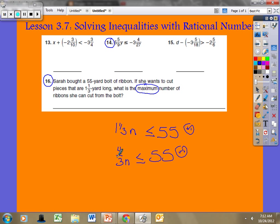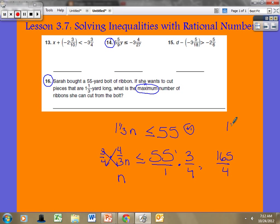I'll convert this to an improper fraction: 4/3 n ≤ 55. To solve for n, I'll multiply by the reciprocal, 3/4. So n ≤ 55 times 3/4. I'll make 55 into 55/1 to multiply: 55 times 3 is 165, so 165/4. Dividing 165 by 4 gives me 41 with a decimal, but I can't cut a decimal piece.